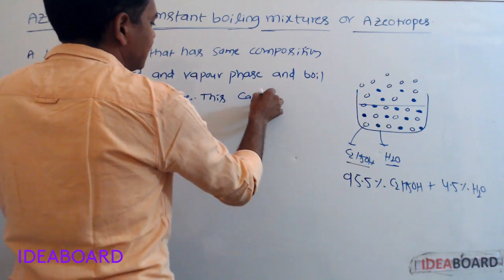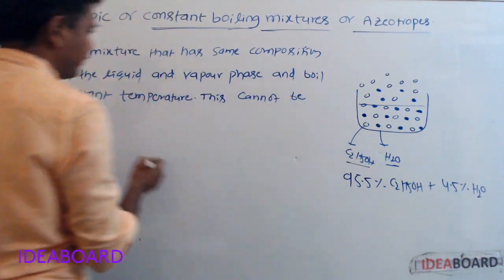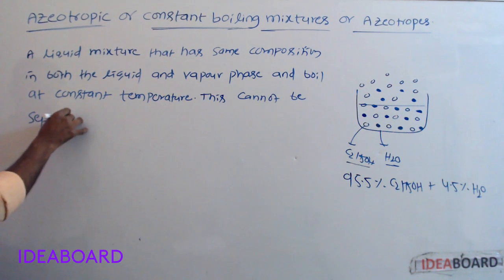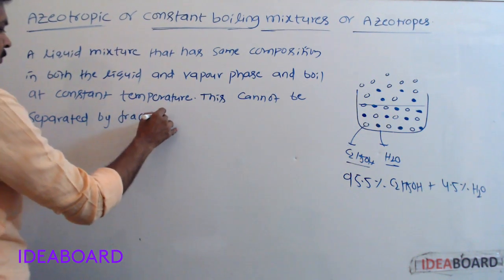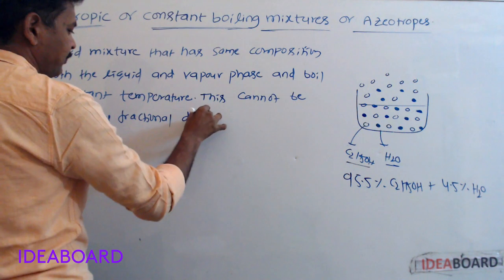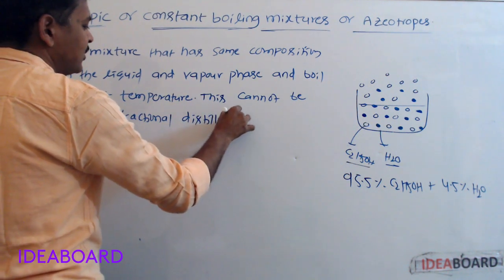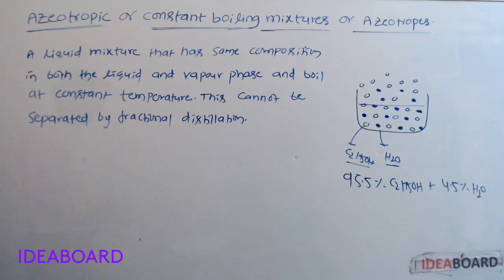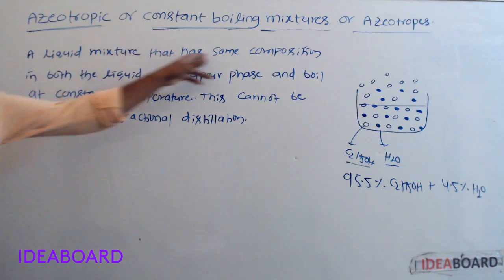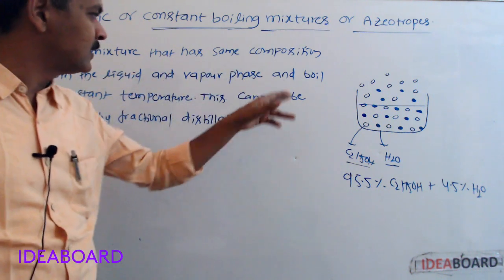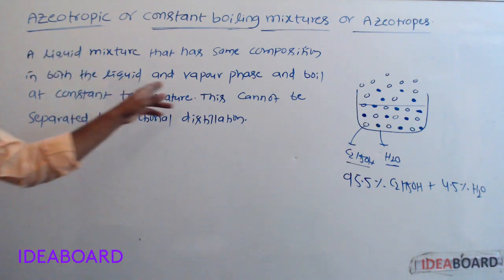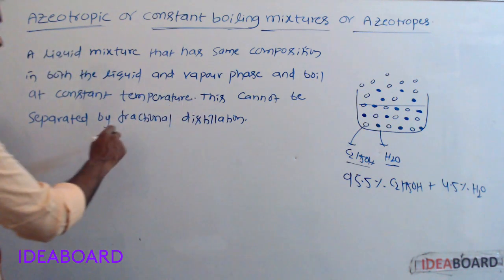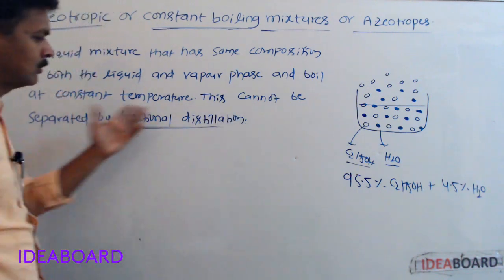An azeotropic mixture cannot be separated by fractional distillation, which is one of the common methods used to separate liquids.